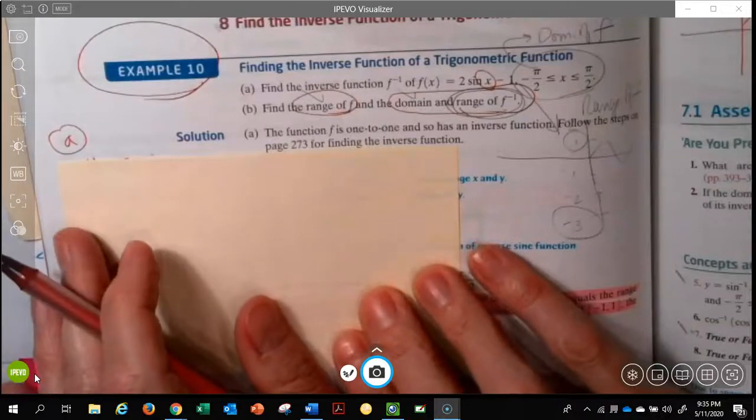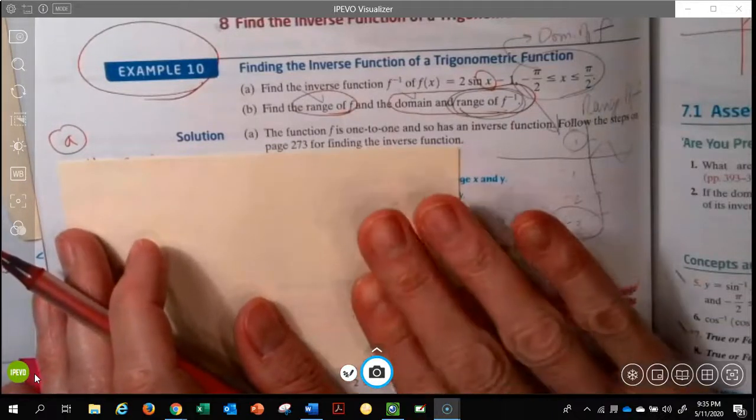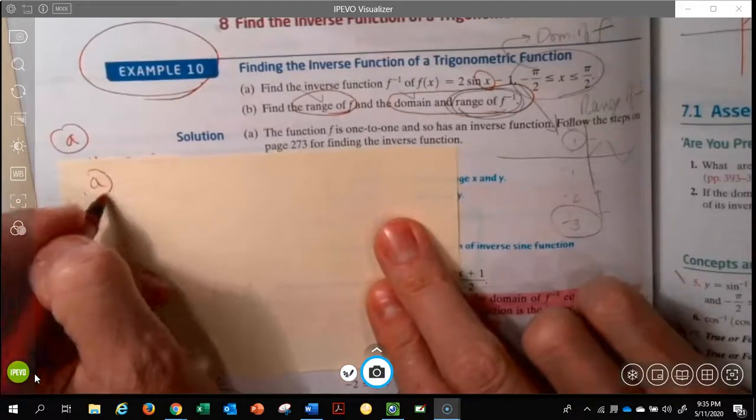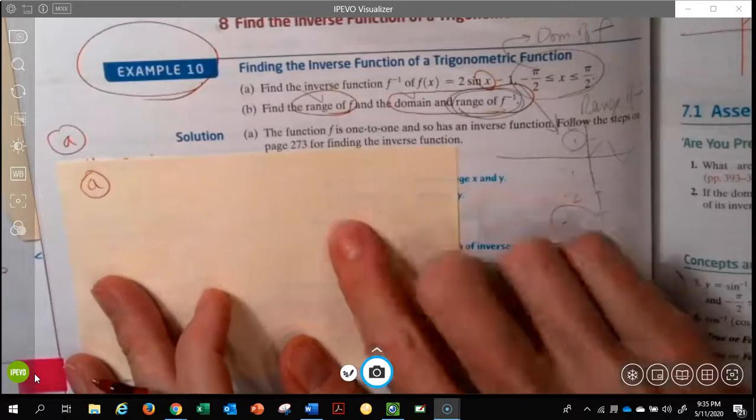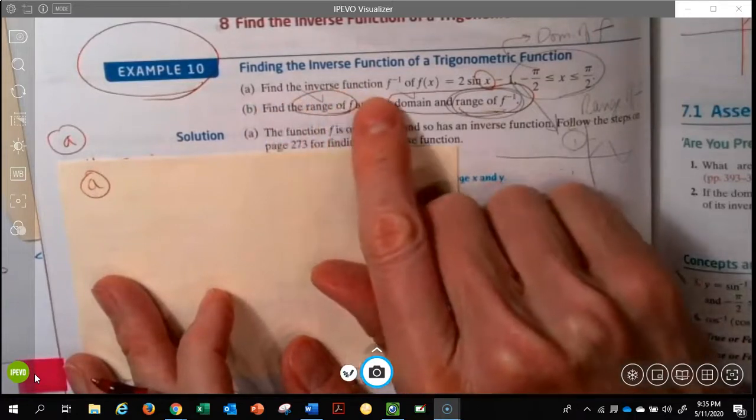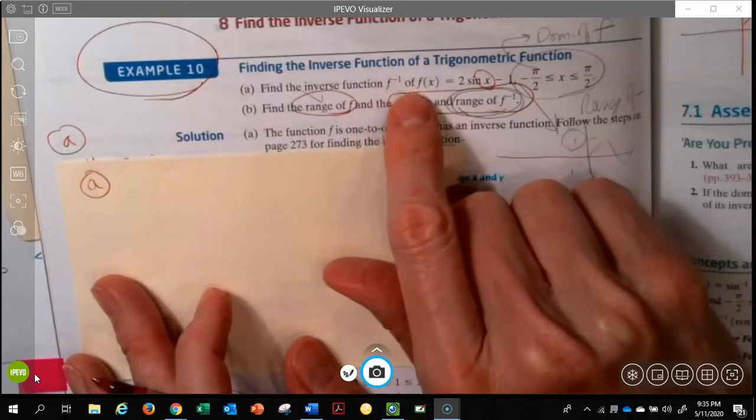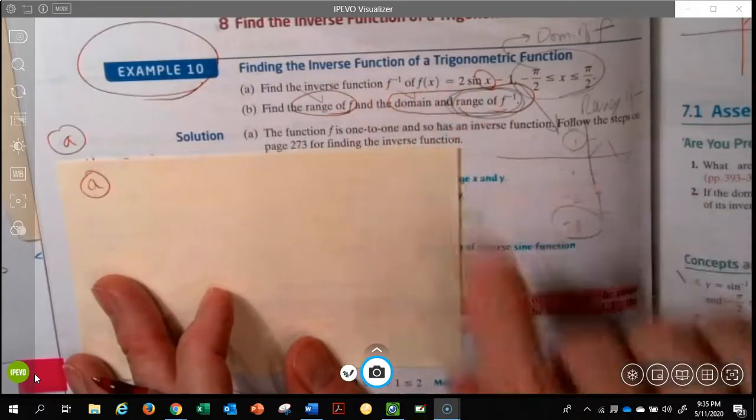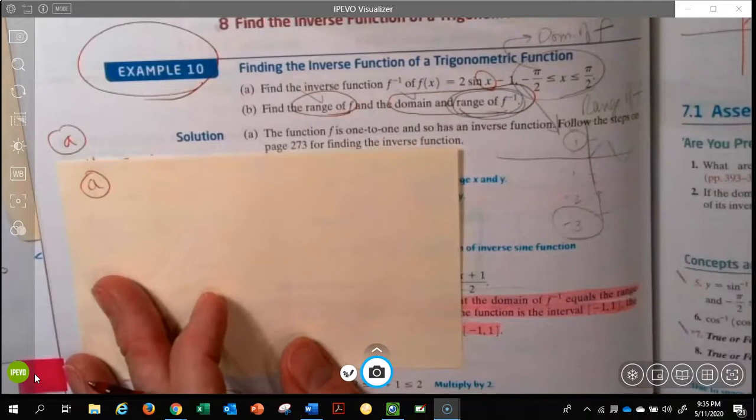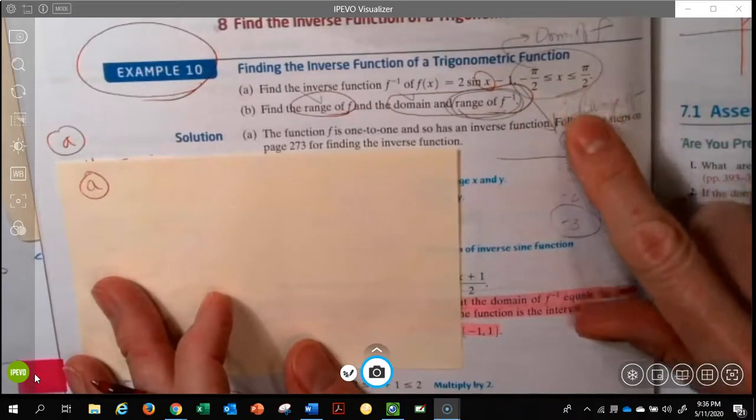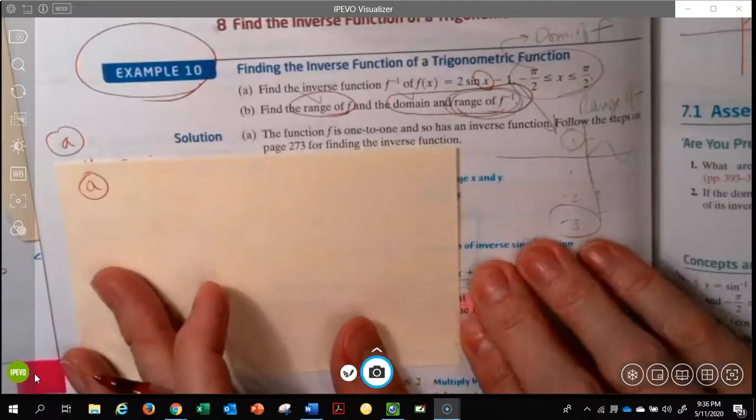We are in section 7.1, and I want to work example 10 for you. To start with, there is a part A and a part B, and it says find the inverse function of f, using that f is 2 sine of x minus 1, and it blocks it for us in our required quadrants.